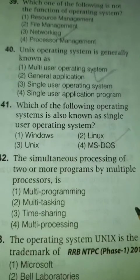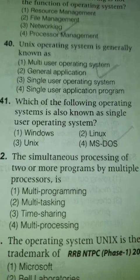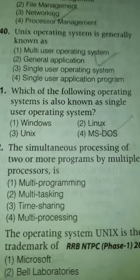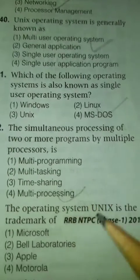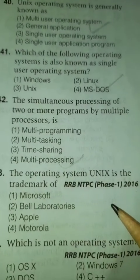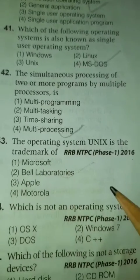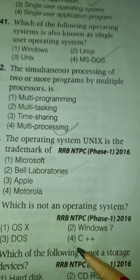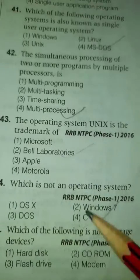The simultaneous processing of two or more programs by multiple processors is called multi-processing. The operating system Unix is a trademark of Bell Laboratories. Which is not an operating system? C++.